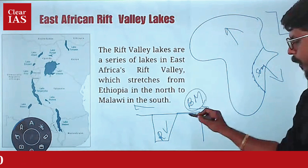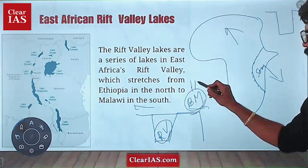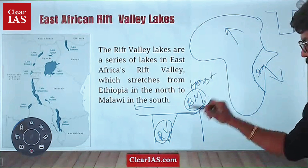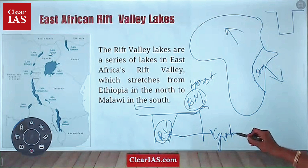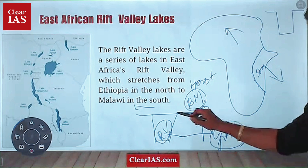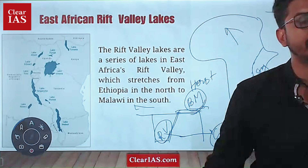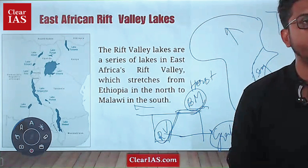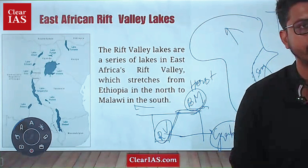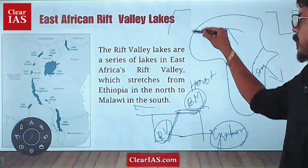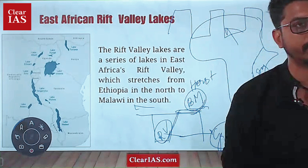Another name we call for block mountains and rift valleys — we have studied Horst (H-O-R-S-T) and Graben (G-R-A-B-E-N). These are other names for block mountains and rift valleys. An example of block mountains in India: the Vindhyas, Satpuras, and Satmalas are examples of block mountains.